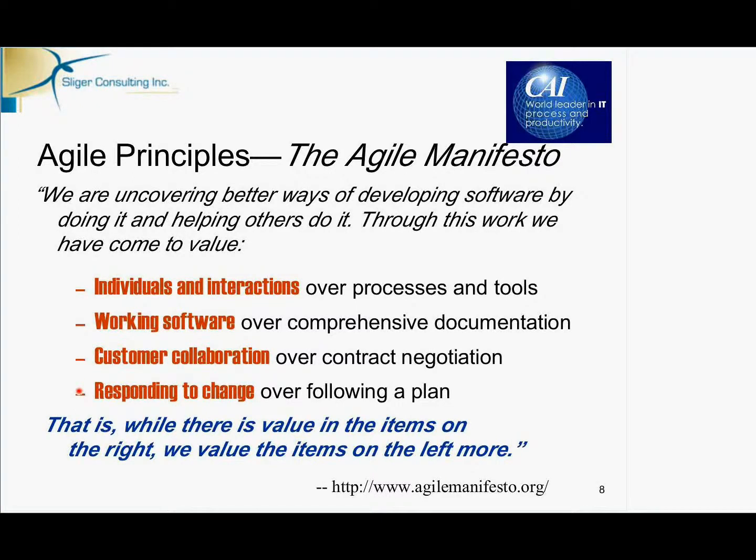Along with this manifesto, there are 12 principles. These are principles like: working software is the primary measure of progress; the most effective and efficient way to convey information is via face-to-face communication; we deliver software frequently; we welcome changing requirements; and our highest priority is to satisfy the customer. These are all important parts of what it means to be Agile, and you can learn more about them by visiting AgileManifesto.org.